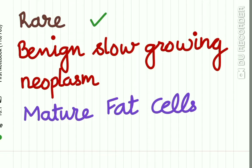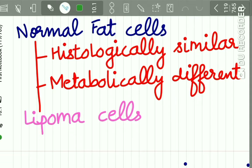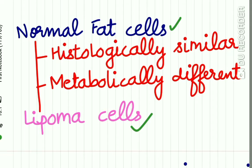Lipoma may occur on the neck, back, thighs, or arms. It is a benign, slow-growing neoplasm composed of mature fat cells. There is a difference between normal fat cells and lipoma cells — although they appear histologically similar, they are metabolically different.